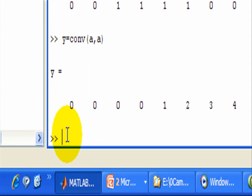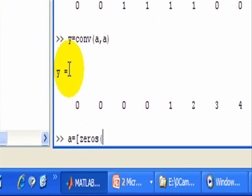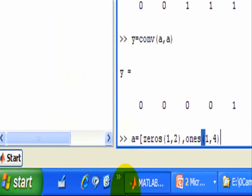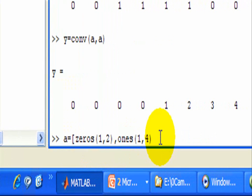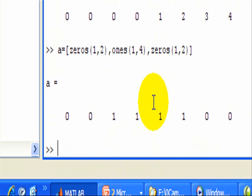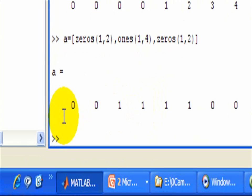We're going to do another example of convolution. This time we're going to convolve two pulse trains. We'll generate a signal A using several functions. One is the zeros, where we have one row and two columns. Another one with ones, one row, four columns. Then we'll have zeros again with one row, two columns. We'll close that bracket here, and that should generate a pulse. And that's what we have here: two zeros, four ones, and two zeros.